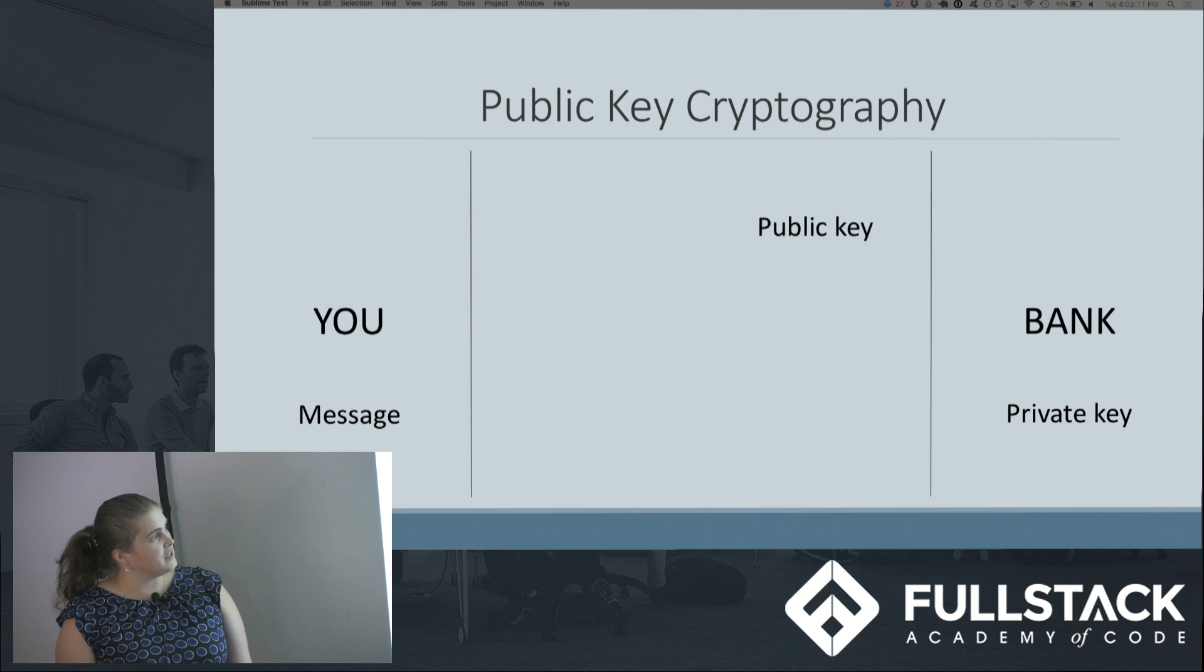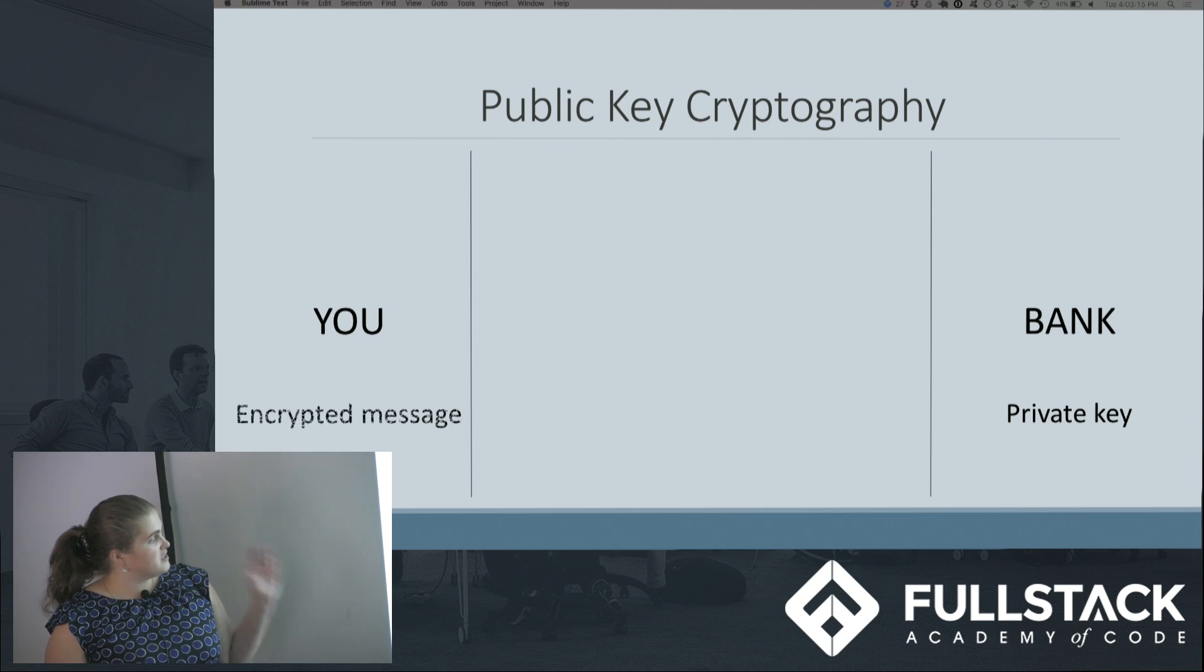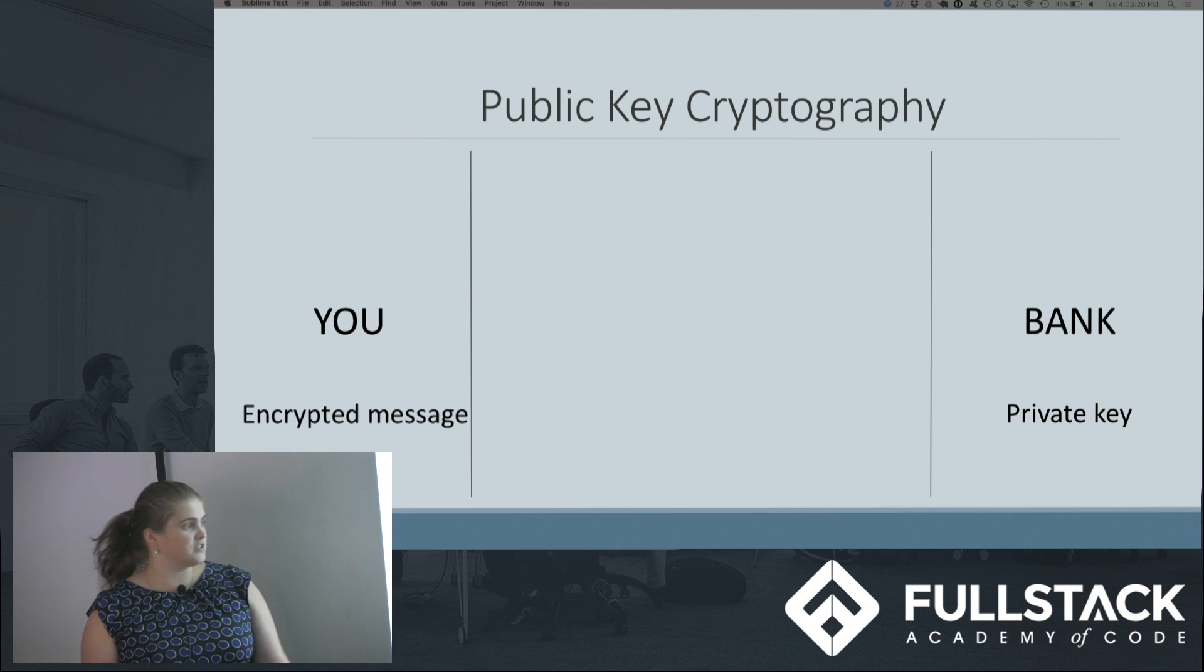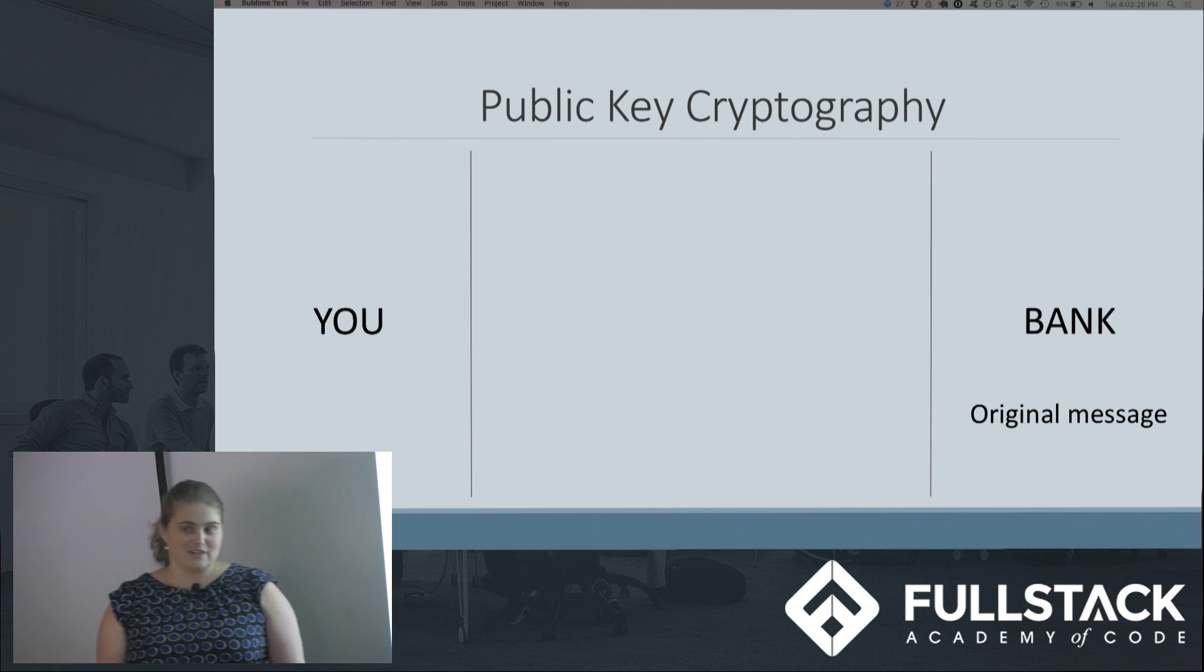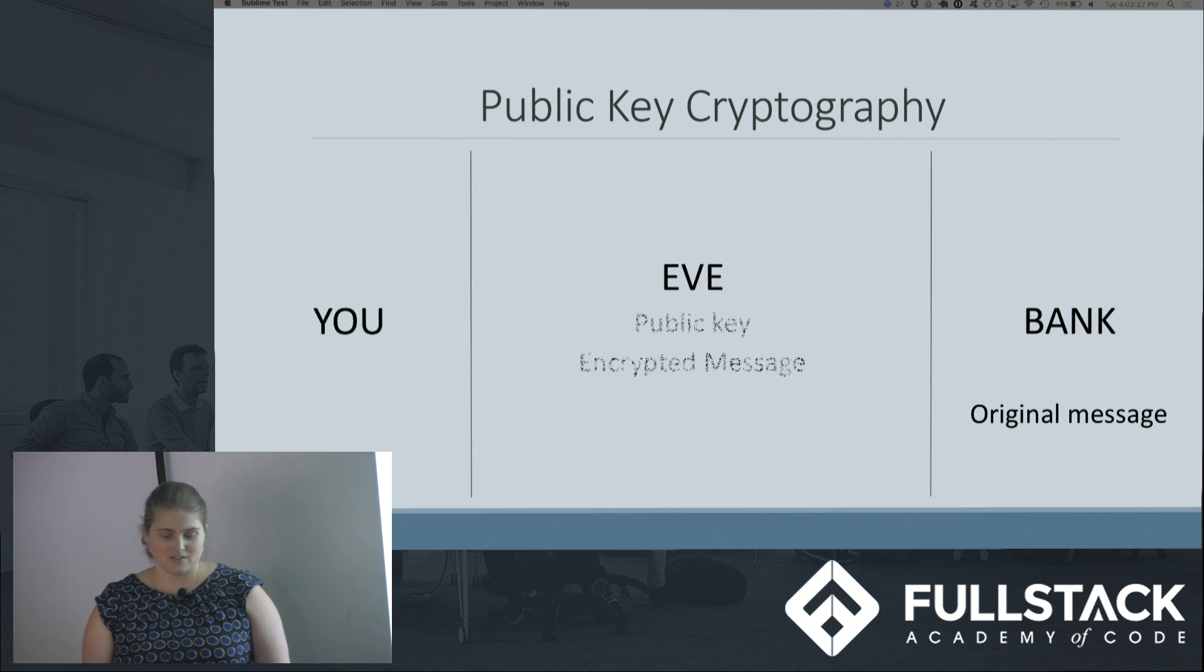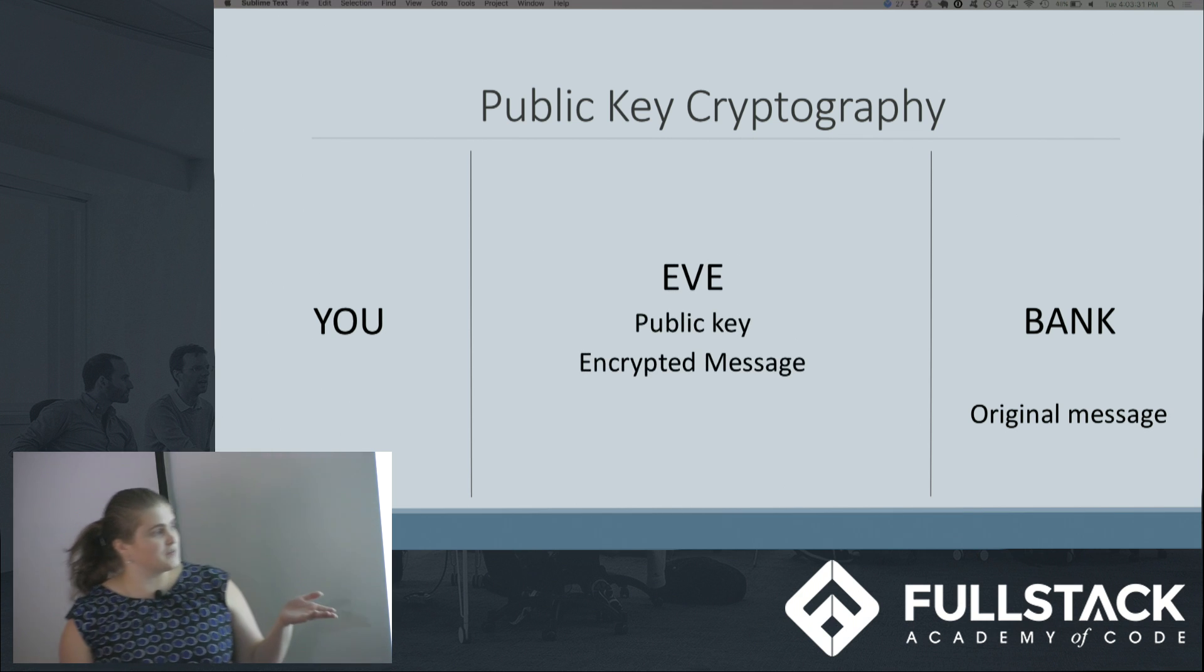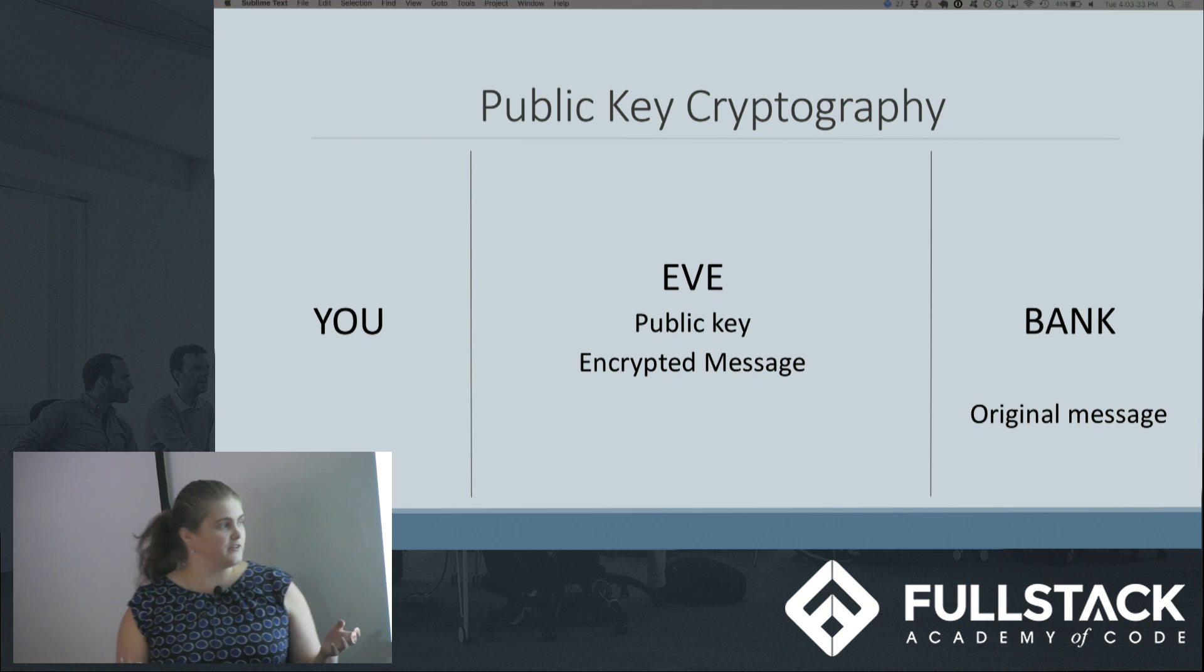You then take that public key, combine it with your message to get an encrypted message. You send that message back to your bank, who uses the private key to get back the original message. If you have your eavesdropper Eve in the middle, she sees your public key and the encrypted message, but she has no way of figuring out—or it's very hard for her to figure out—what your private key is and what the message is.